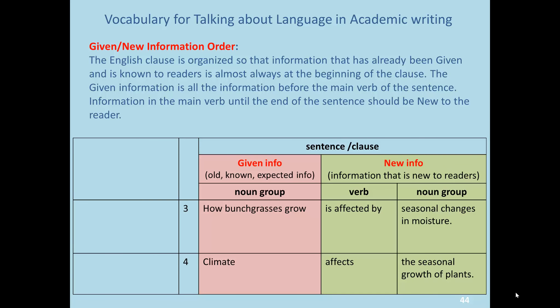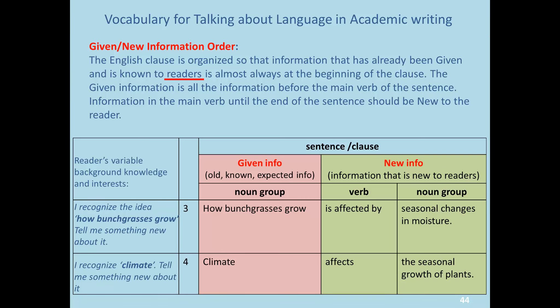Please pause the video here and read this over. What's so central about given and new information order is that it's focused on the reader — what the reader already knows. For sentence 3, for example, the reader might think: 'I recognize the idea of how bunch grasses grow — tell me something new about that.' In contrast, in sentence 4, the reader will recognize 'climate' but want new information about climate.